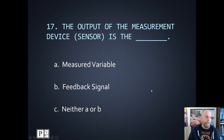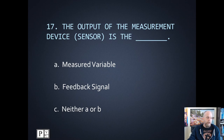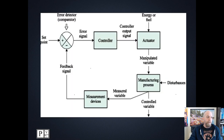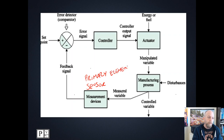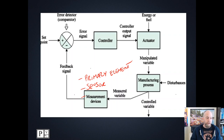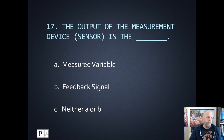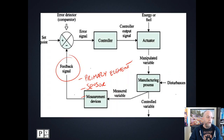Now onto the multiple choice questions. Number seventeen: the output of the measurement device or sensor — also called the primary element — is what? The output is our feedback signal. The answers were: the measured variable, the feedback signal, or neither. The answer is feedback signal.